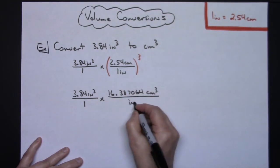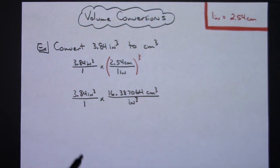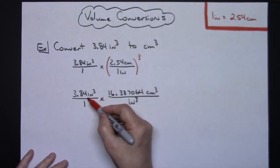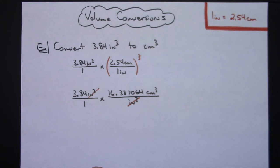One cubed is just going to be one, inches cubed will be inches cubed there on the bottom. All right, now I can cross off inches cubed, multiply across the top, multiply across the bottom. I just have a one times one on the bottom.